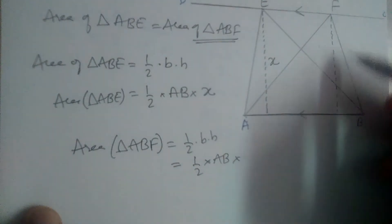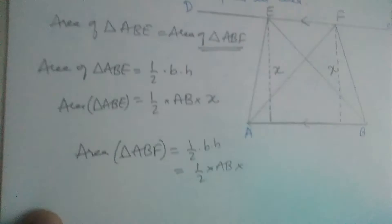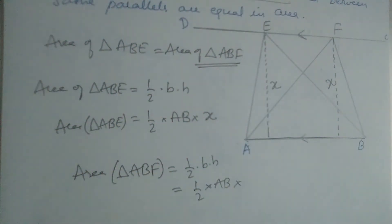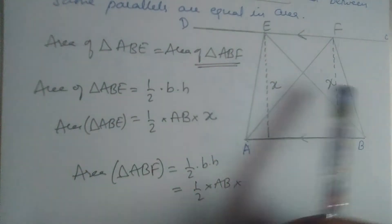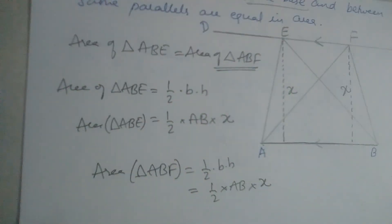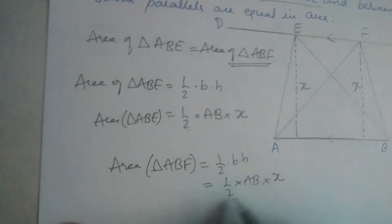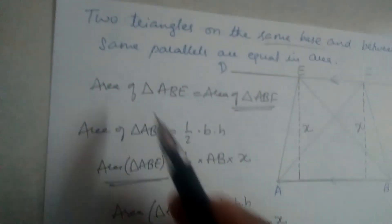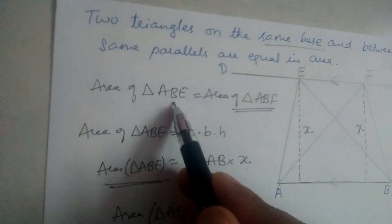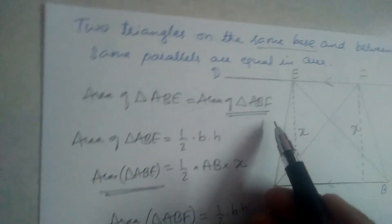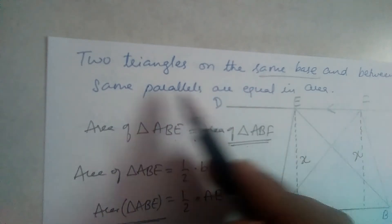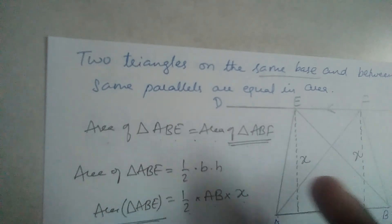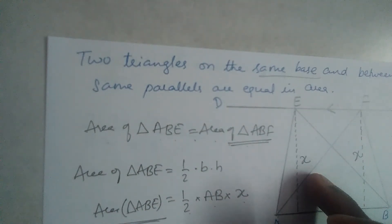If we drop a perpendicular for triangle ABF, this distance will also be X — because these two are the distances between the parallel lines, and the distance between parallel lines is equal. So the area of ABF is also half into AB into X. Therefore, area of triangle ABE equals area of triangle ABF. We will use this theorem in proving the Basic Proportionality Theorem, or Thales' theorem.